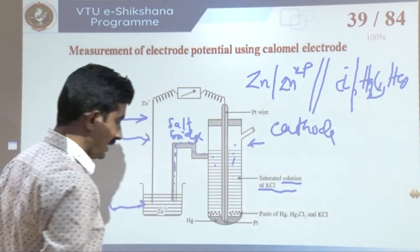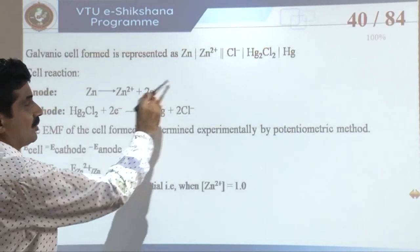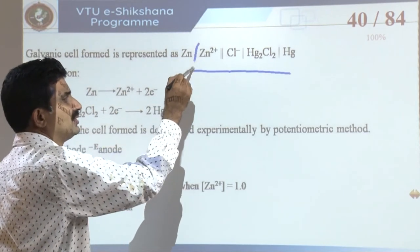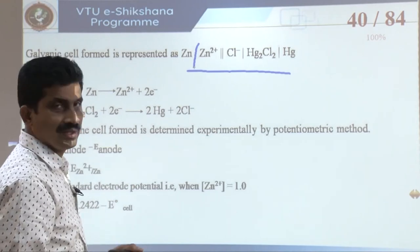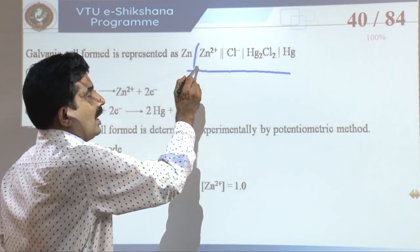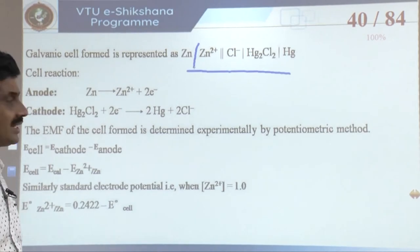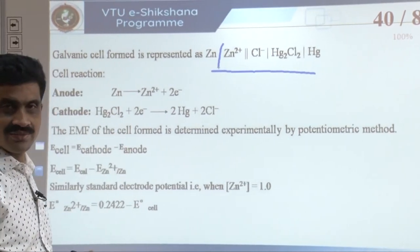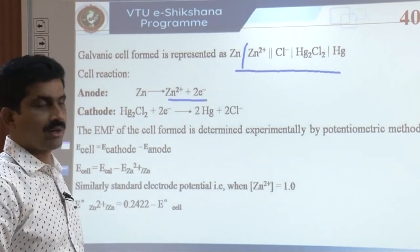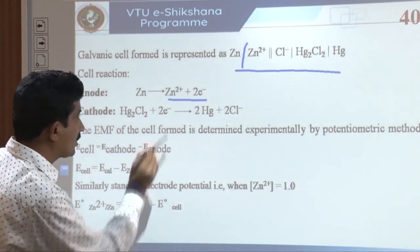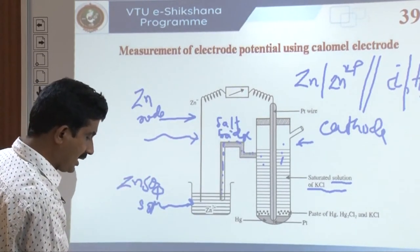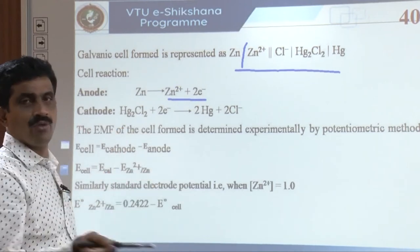This is how the potential values are determined using the calomel electrode. Now we shall discuss ion selective electrodes. Ion selective electrodes are selective to a particular ion, developing a potential proportional to the concentration of only that ion while ignoring all other ions present in the solution. In a mixture, these electrodes sense only a particular ion and develop a potential proportional to its concentration.